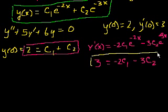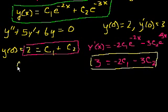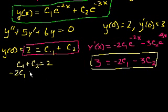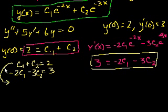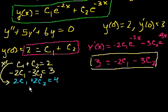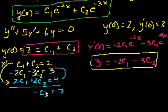We have two linear equations with two unknowns and we can solve. The first is c1 plus c2 equals 2, and the second is minus 2c1 minus 3c2 equals 3. Let's multiply the top equation by 2, giving us 2c1 plus 2c2 equals 4. Adding the two equations, the 2c1 and minus 2c1 cancel out, leaving minus 3 plus 2, so minus c2 equals 7. Therefore c2 equals minus 7.